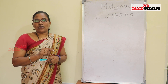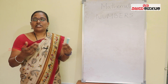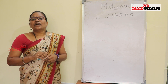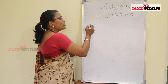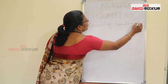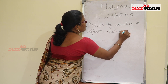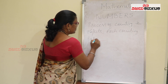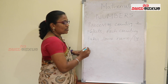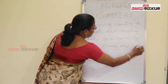And those symbols are called one, two, three, four, five — in various languages and scripts. So these are the symbols. These symbols are known as numbers. In the process of counting objects, each counting takes some name or symbol, and these names are called numbers.